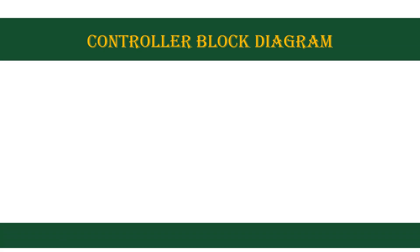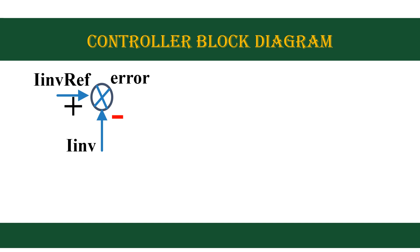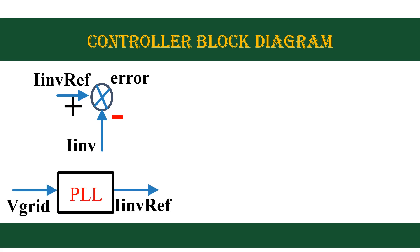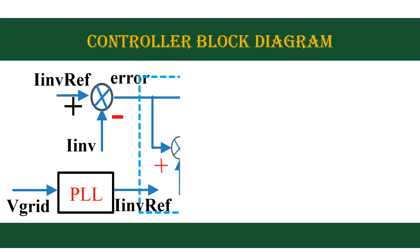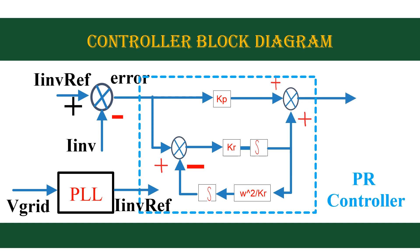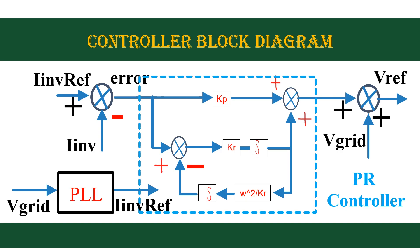Now I will explain how we implement a controller for grid connected inverter. First we need to find the difference between inverter current reference value and actual inverter current. We can use grid current also for the implementation of the controller. The reference current is generated using a PLL — working and implementation of PLL I have explained in my previous video. The error is now fed to a PR controller. You can also use a PI controller instead of PR controller, but for better steady state performance, PR controller is better. Output of PR controller is now added with grid voltage, and that will generate the reference signal for the generation of PWM.